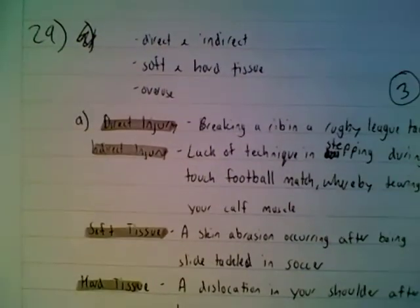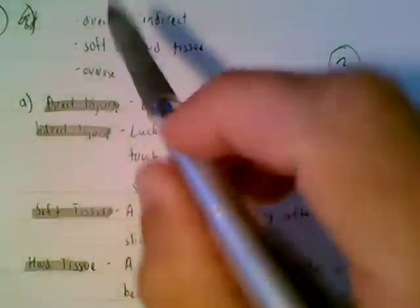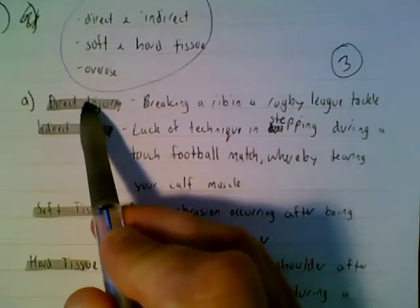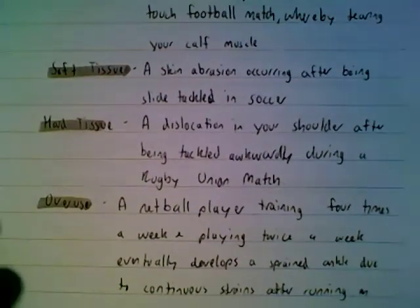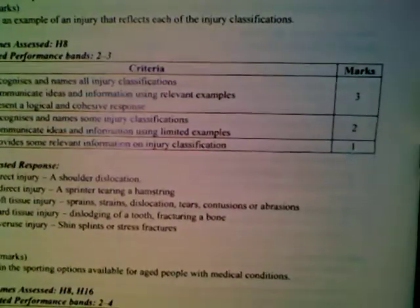Looking at a very good student answer that achieved three out of three, you'll see it's written in dot-point format at the top — making it clear exactly what needs to be addressed. It covers direct injury with an example, indirect injury with an example, soft tissue with an example, hard tissue with an example, and overuse with an example. Very good layout — clear, straight to the point, no wasted space, with exactly the examples the question asked for.